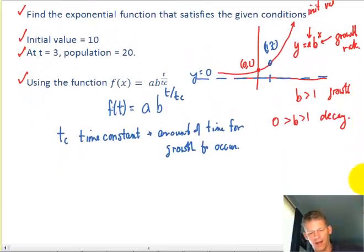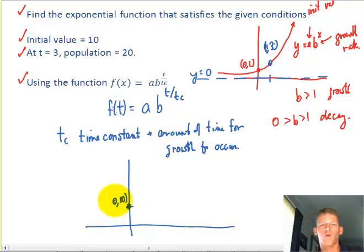It says our initial value is 10. So at time 0, I'm at 10. So I already know what my a coefficient should be. It's going to be 10 because that's the initial value. At time equals 3, I go to 20.